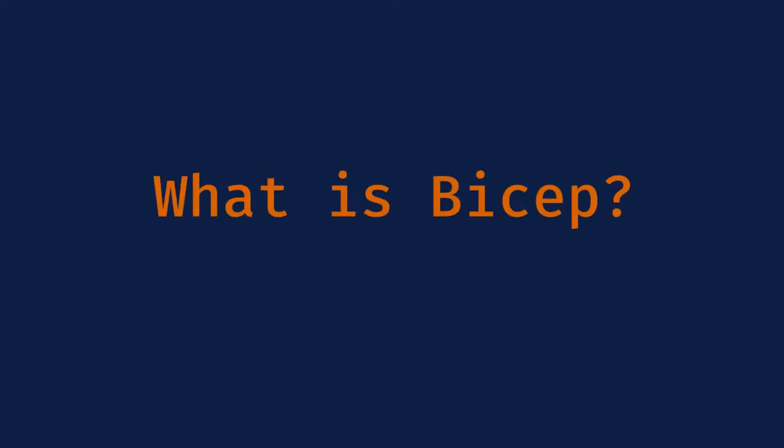Let's start with the question: what is Bicep? But first, let's talk about ARM. You might be familiar with something called the Azure Resource Manager, also known as ARM. ARM templates are big JSON documents that you can use to deploy Azure resources. They also have the ability to accept parameters or inputs so you can create variables for things like resource names, settings, different SKUs, IP addresses, and domain names. But they aren't terribly friendly to work with because they're huge. So Microsoft set out to simplify the challenges with ARM templates and wanted to create something with a concise syntax, reliable type safety, and support for code reuse. That's what Bicep is.